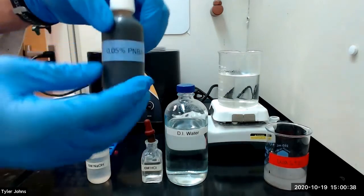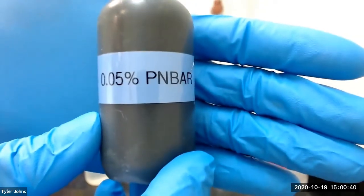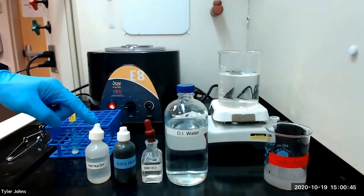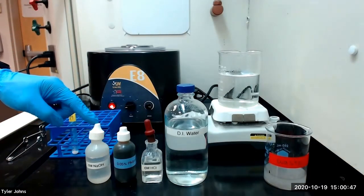We will then add 1 drop of magnesium reagent. We will then make the solution alkaline with the addition of 6 molar sodium hydroxide.